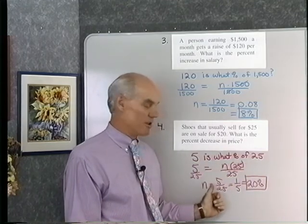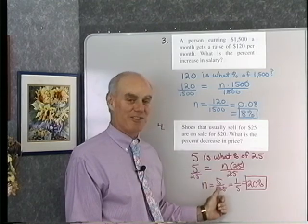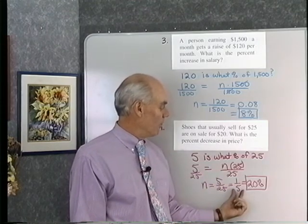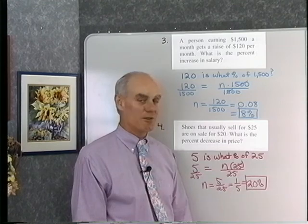When I do that, I get an equation, translate the equation, or I get the equation, solve the equation, I get 5 over 25, that's one-fifth. One-fifth as a percent turns out to be 20%.